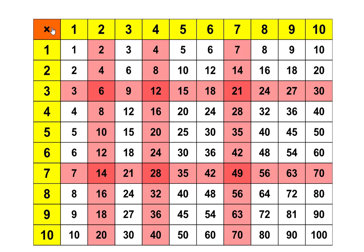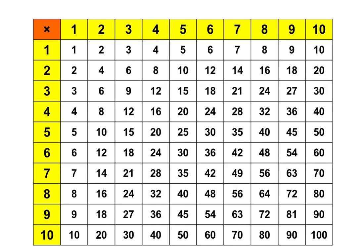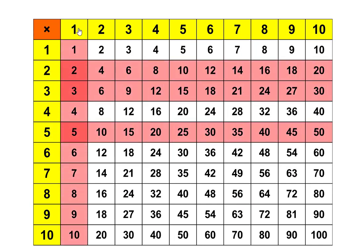Something else that I found very interesting was that I can add numbers on the table. 2 plus 3 is equal to 5, and we can see that here. That means that 6 plus 9 is equal to 15, 12 plus 18 is equal to 30, and 18 plus 27 is equal to 45.